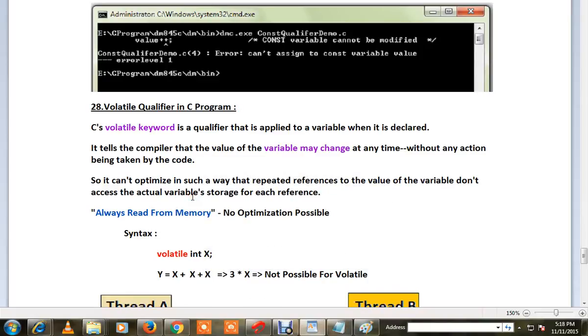Hi friends, welcome to C programming tutorial. In this video I'm going to talk about volatile qualifier in C program. C's volatile keyword is a qualifier that is applied to a variable when it is declared. It tells the compiler